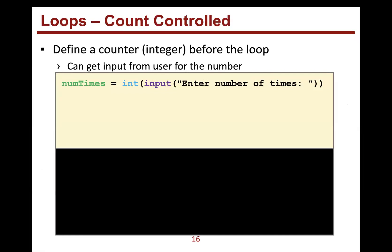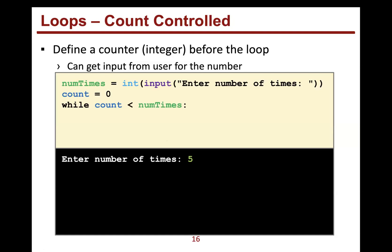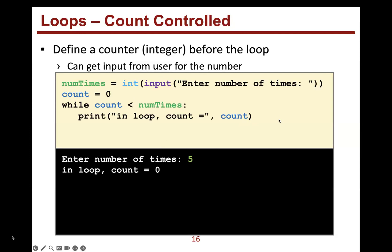Here's a count-controlled loop example where we get input from the user. Instead of hardcoding 10 or 30, I ask: how many times do you want to loop? If the answer is five, I create a count variable initialized to zero, then loop while count is less than the number of times. Inside the loop I print the count, then increment count — either with count += 1 or count = count + 1.